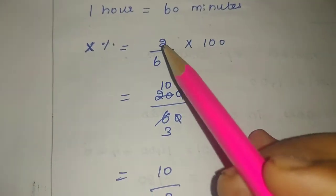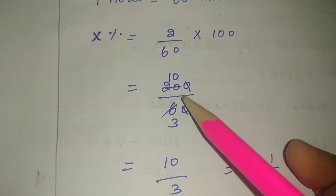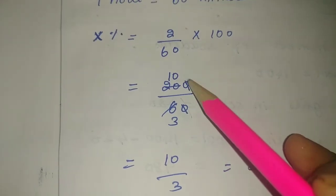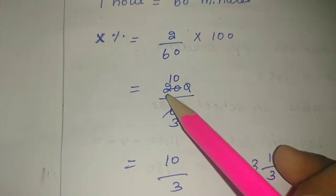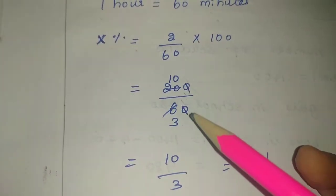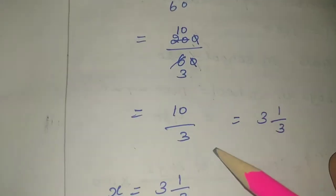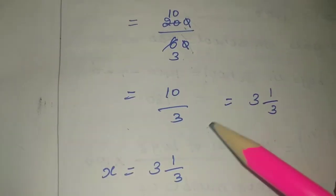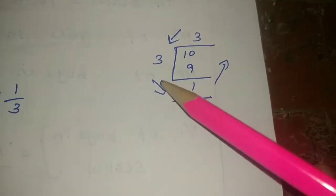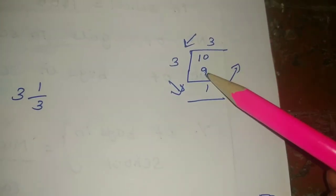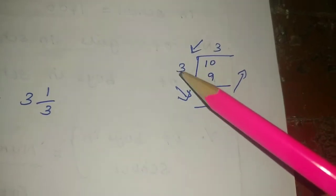So, 2 into 100 equals 200, divided by 60. Simplifying: 200 by 60 gives 10 by 3. So the answer is 10 by 3, which is 3 and one-third, a mixed fraction.